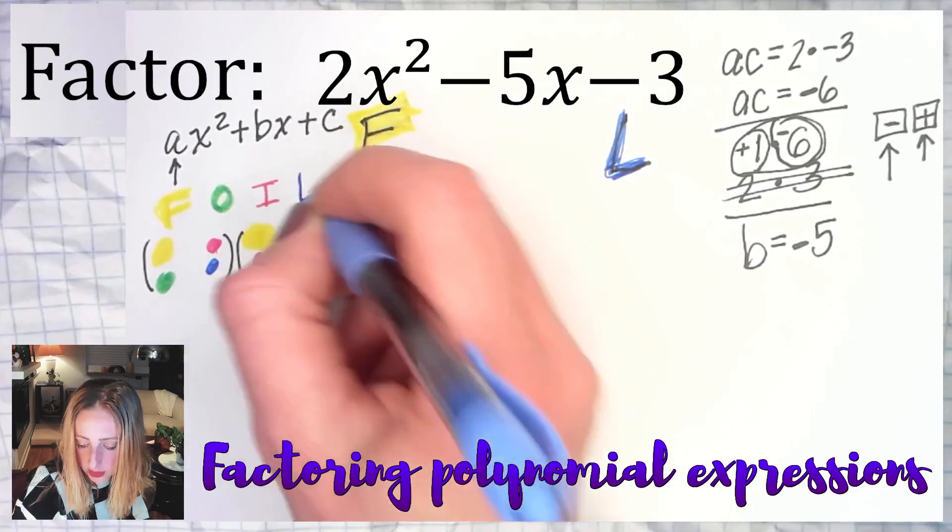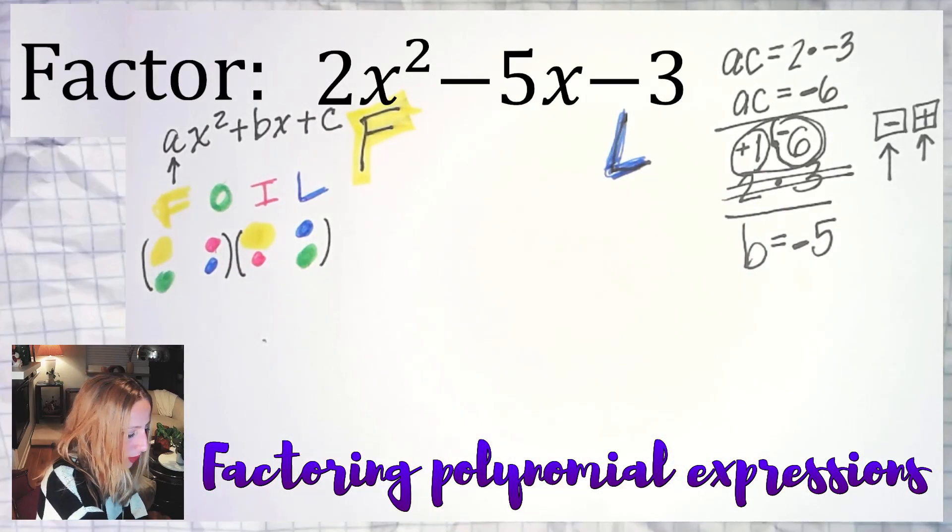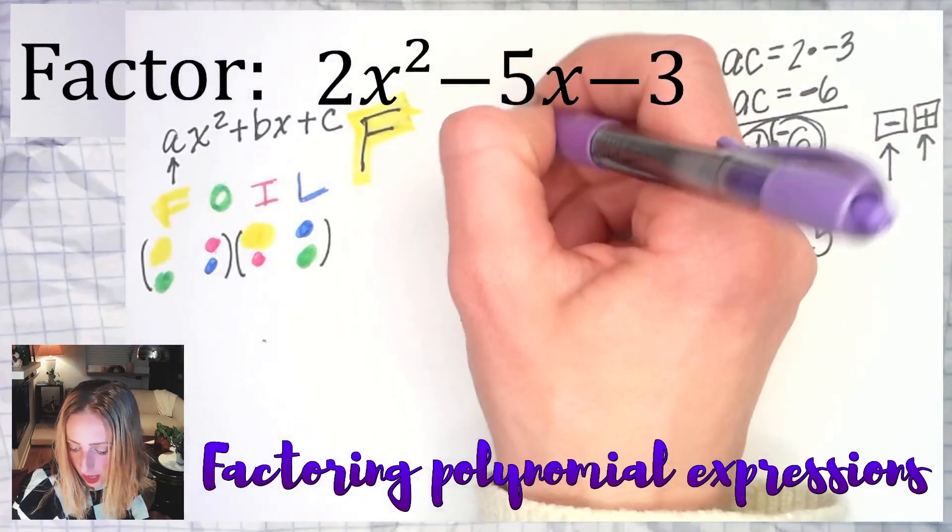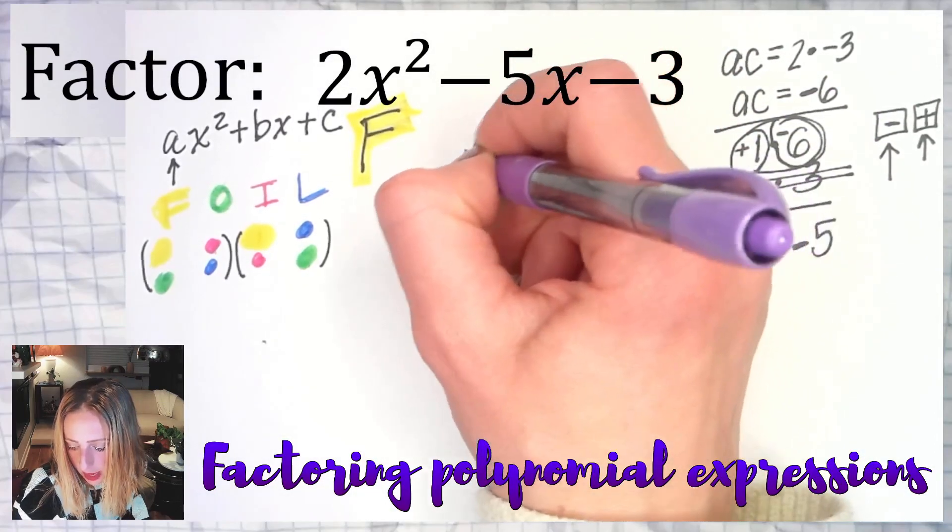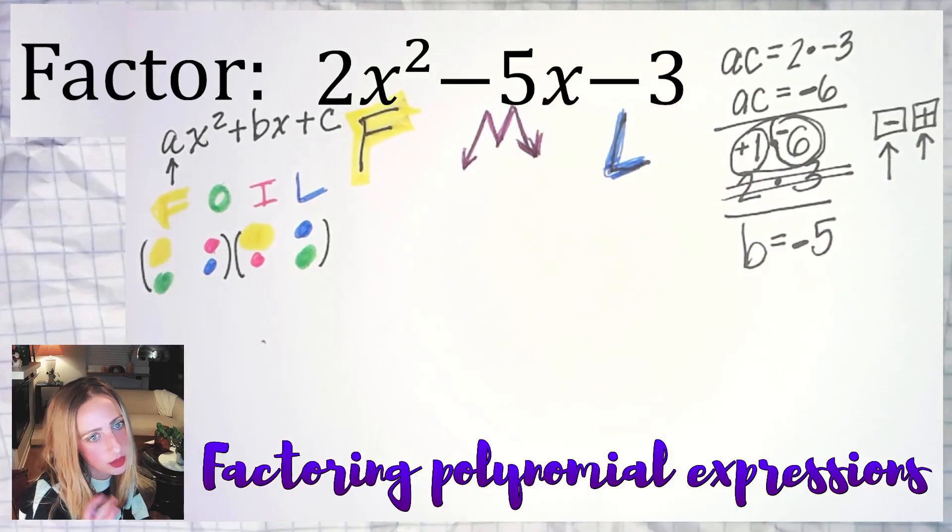But we don't have two terms right now. We have just negative 5. Well, what's negative 5, you may be asking? Well, negative 5 is what happens when the outer and the inner come together and combine, and that makes us a middle term. So F, M, L, and we're going to split the M so that we no longer have to deal with F, M, L, and we'll just have an O and I in the middle, and then we can work backwards with grouping and get it all factored. So that's what that plus 1 and minus 6 do.